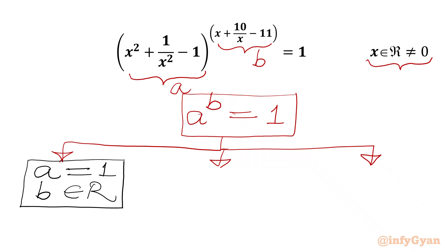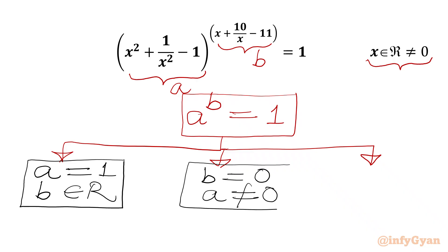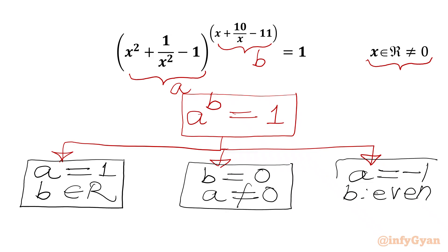Case 2 is when our power is 0, and at the same time the base should not be 0 — then we get RHS equal to 1. The third case is when our base is negative 1 with an even power b, and we will again get value 1.